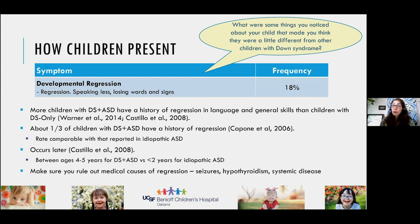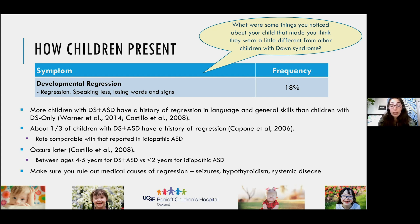Some kids with Down syndrome and autism present with a regression — maybe a third or less. Notably, this regression tended to happen later than for children with idiopathic autism. Of course, as a medical provider, I would first want to rule out medical causes of regression, including new seizures, hypothyroidism, or other systemic disease that would explain the regression.